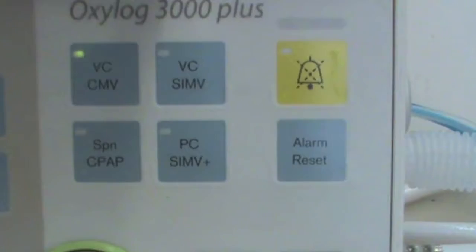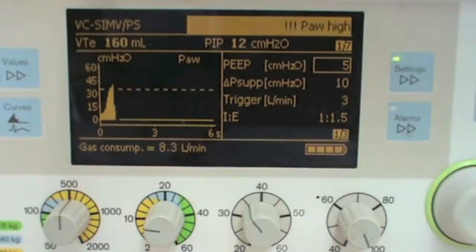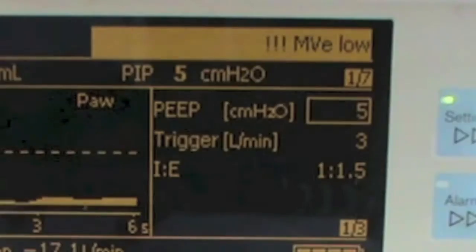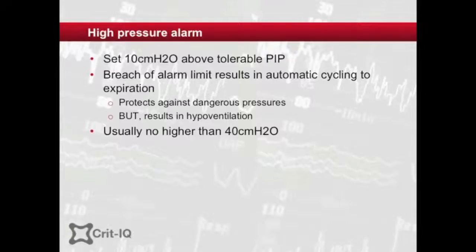This results in a truncated inspiration, and as such, much lower volumes are delivered than have been set. As a result, the lung is protected from the high pressures, but the consequence of this is that the patient may be dangerously underventilated. In practice, peak pressure alarms are set to around 35 to 40 centimetres of water.